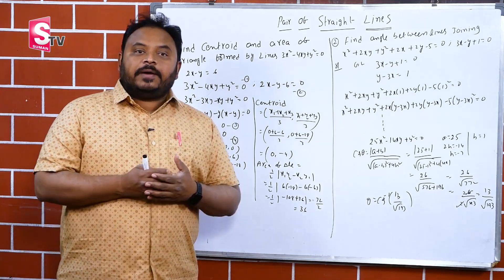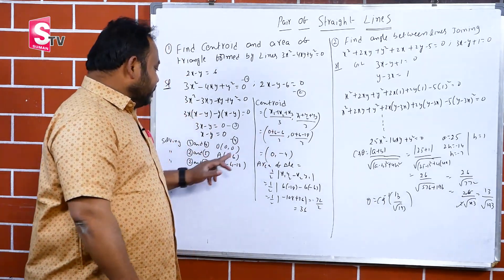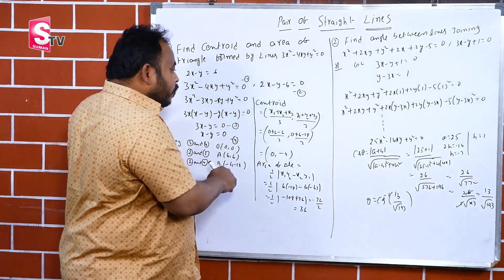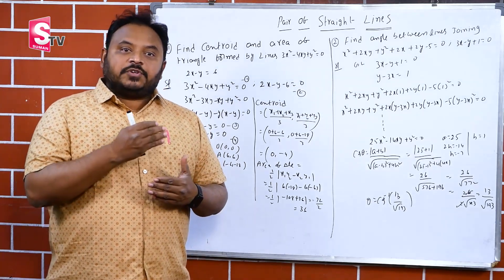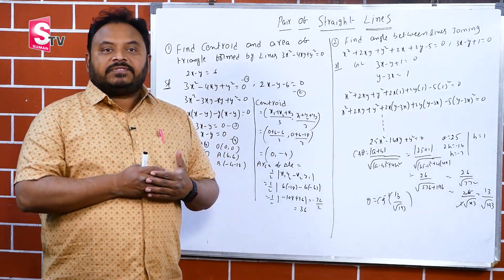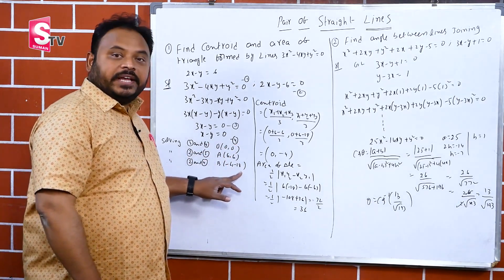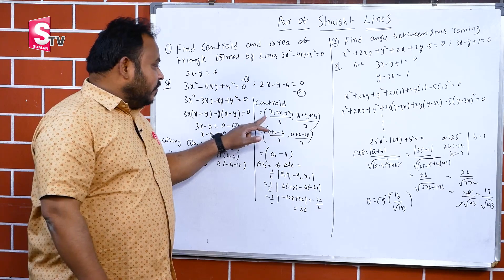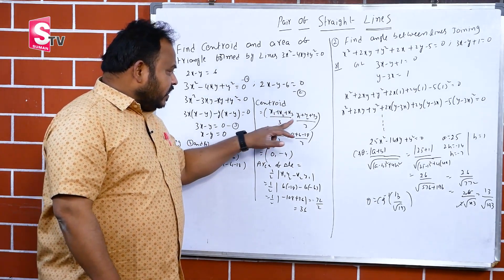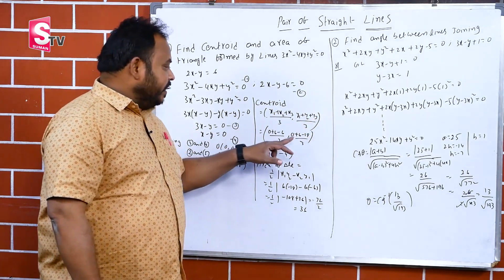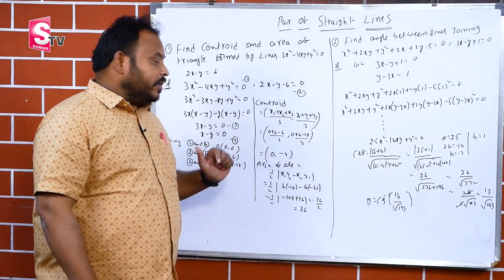We have the three vertices: (0, 0), (6, 6), and (−6, −18). Substituting into the centroid formula: x-coordinate = (0+6+(−6))/3 = 0/3 = 0; y-coordinate = (0+6+(−18))/3 = −12/3 = −4. The centroid is (0, −4).